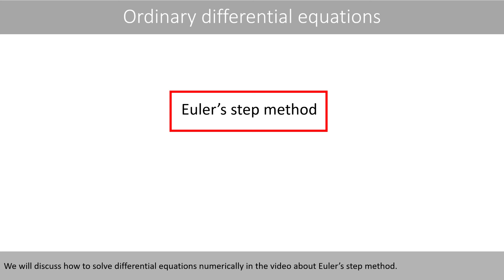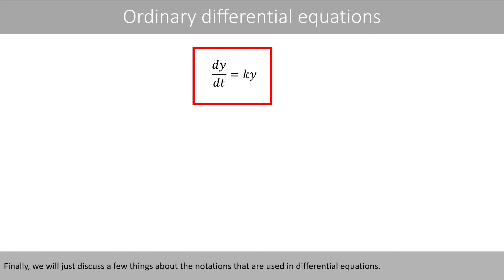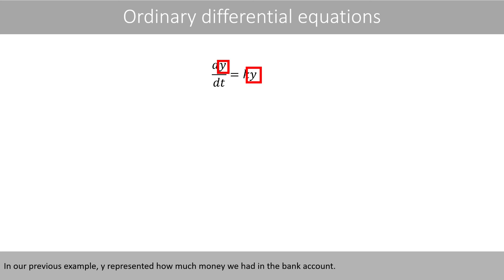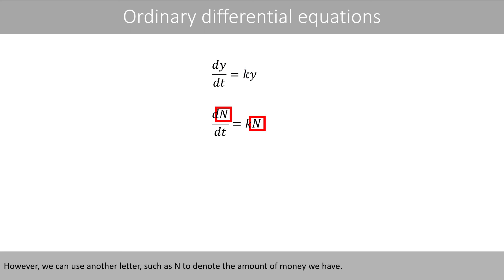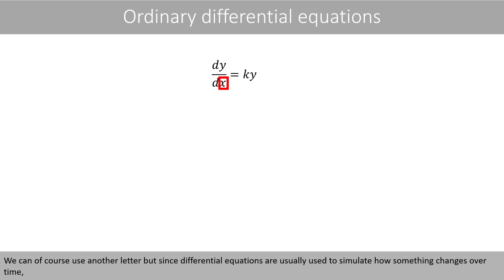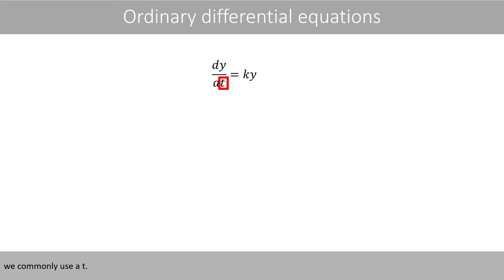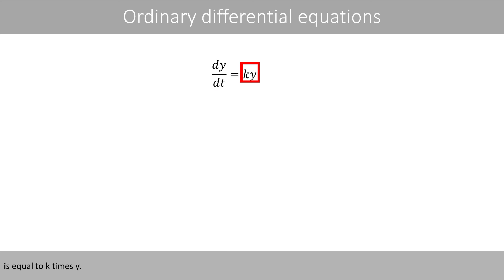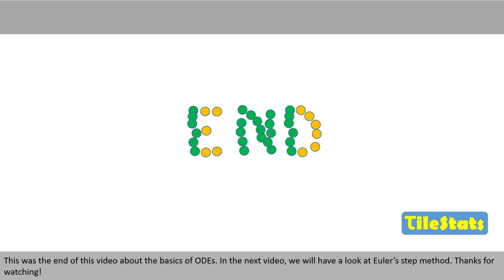We'll discuss how to solve differential equations numerically in a video about Euler's step method. Finally, a few notes about notation used in differential equations. In our example, y represented how much money we had in the bank account, but we can use another letter such as n to denote the amount. The reason we use t is that t usually represents time, and differential equations are commonly used to simulate how something changes over time. This notation tells us how much y changes when t is changing — the derivative with respect to t is equal to k times y, often called dy/dt. This was the end of this video about the basics of ordinary differential equations. In the next video, we'll have a look at Euler's step method. Thanks for watching!